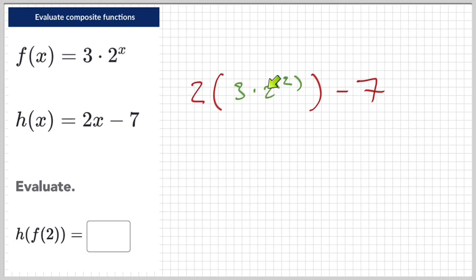So, let's go all the way to the inside. We go 2 raised to the 2 power? 4. 4 times 3? 12. 2 times 12? 24. Minus 7? 17. So it's the same thing. Just another way to look at it.